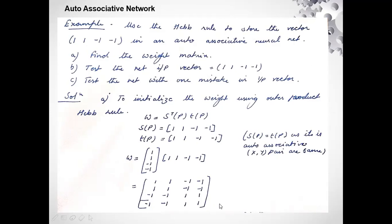So this is the weight matrix for this auto-associative neural network. The formula is W equals S_p transpose multiplied by T_p. After performing the matrix multiplication of the column vector [1, 1, -1, -1] with the row vector [1, 1, -1, -1], we obtain the resulting 4×4 weight matrix.